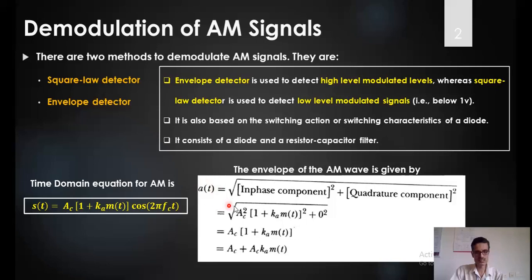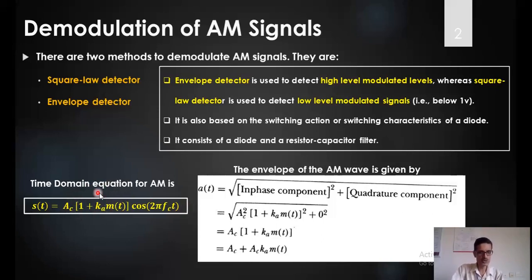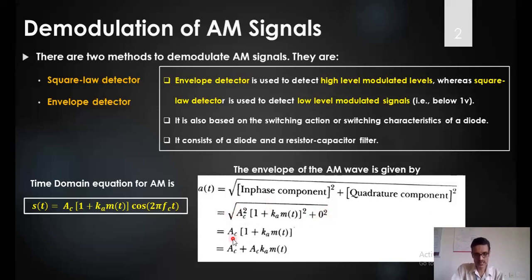The envelope is given by the root of the sum of the square of the in-phase component and the quadrature component. Now, if I go back to this equation, I have only the in-phase component; the quadrature component is zero. The in-phase component has the amplitude equal to this. So the square of the in-phase component is AC squared times (1 plus KA·m(t)) whole square, plus the quadrature component which is absent, that is zero. So the root of that is nothing but AC into (1 plus KA·m(t)). That gives me AC plus AC·KA·m(t).